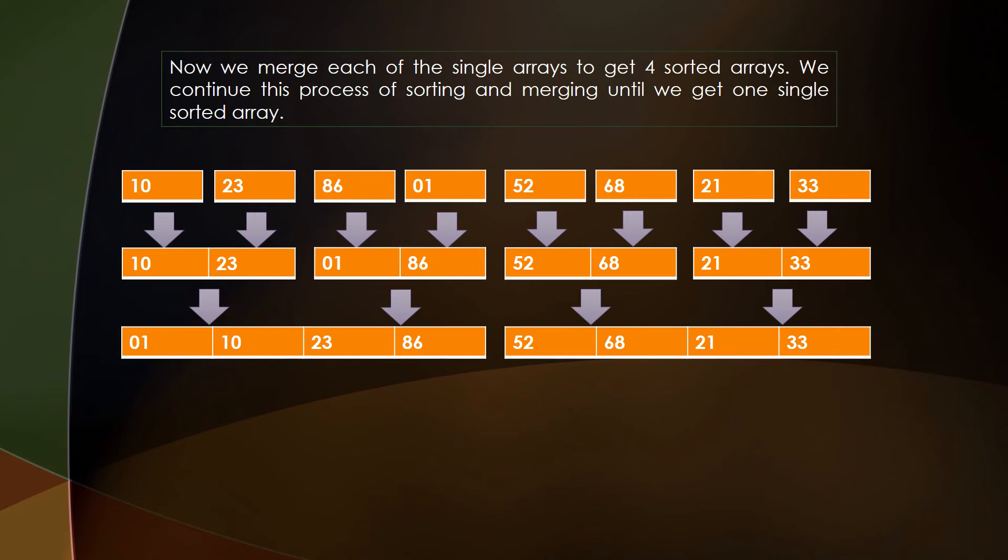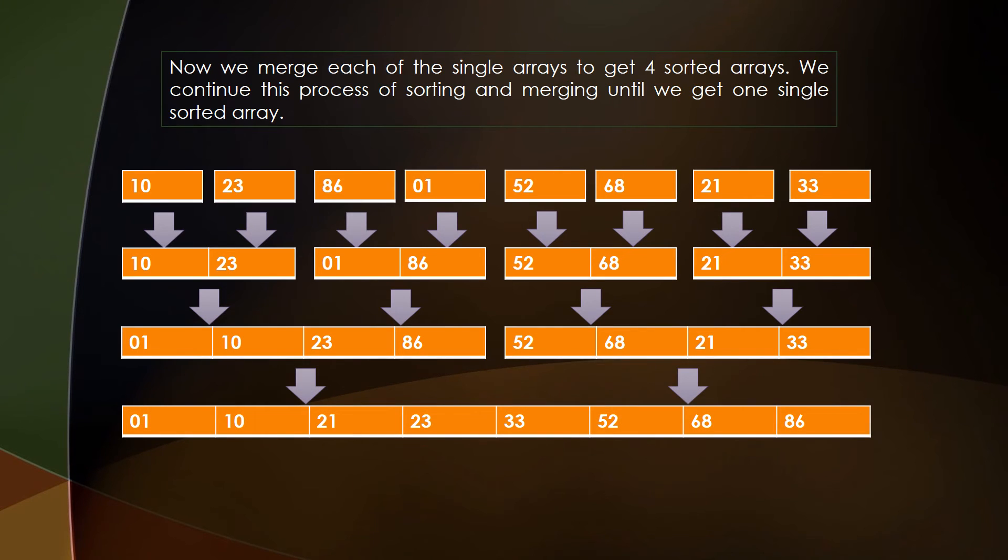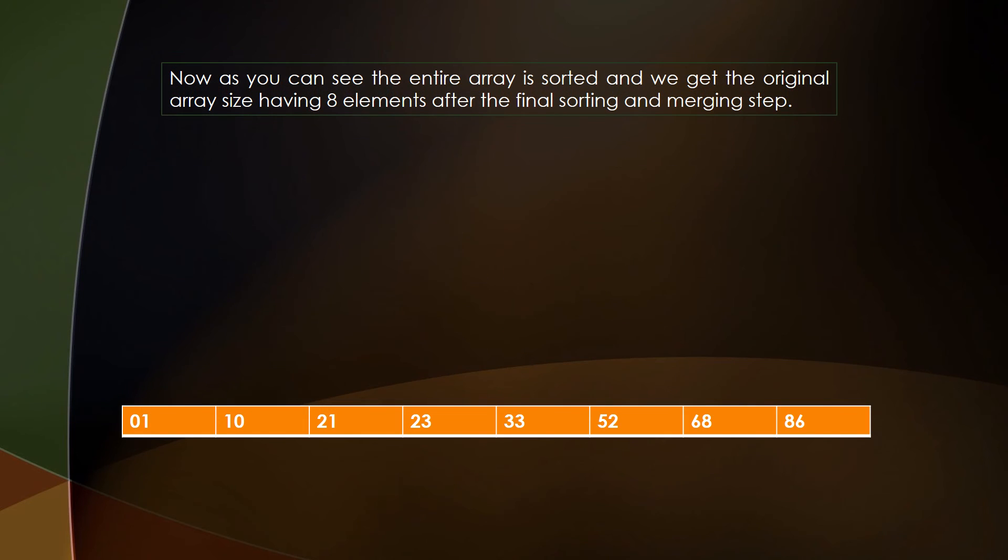As you can see, the position of the elements have been interchanged so that both these sub-arrays are in the sorted position. Now finally we merge the two remaining sub-arrays to get the final sorted array. And this is the array that we had earlier, that is an array of eight elements. So this is the way merge sort algorithm is performed.